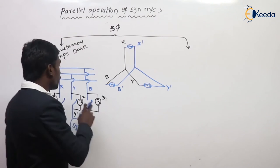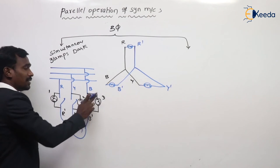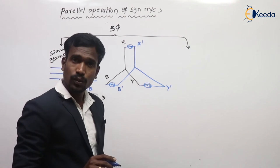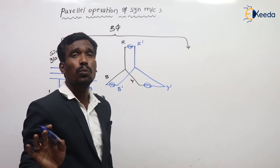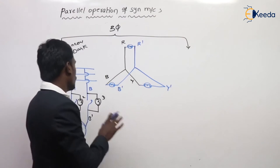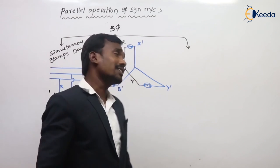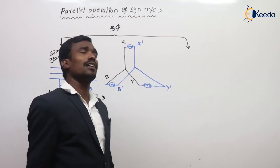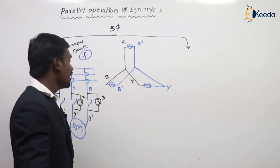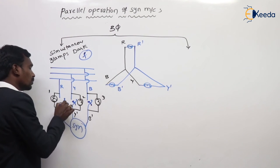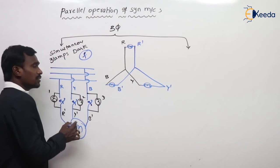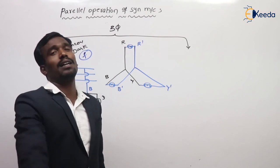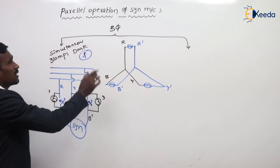The phase sequence is also important here — R with R', Y with Y', B with B'. We must maintain same phase sequence; then only the lamp method will work. Phase sequence should be same first, and second, frequency should be same. When the three lamps give simultaneously dark, at that condition we close the switch and the machine synchronizes with the bus bar. This is the three lamps dark method.